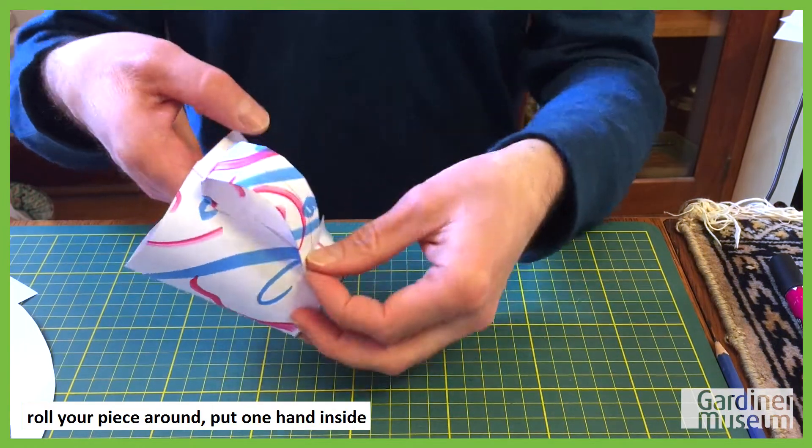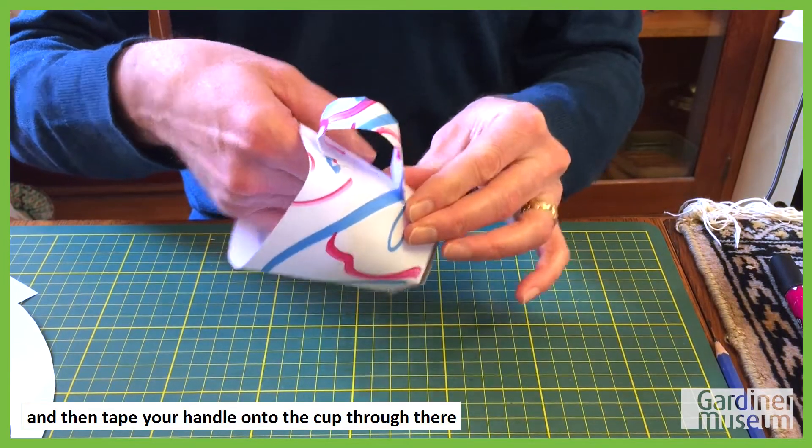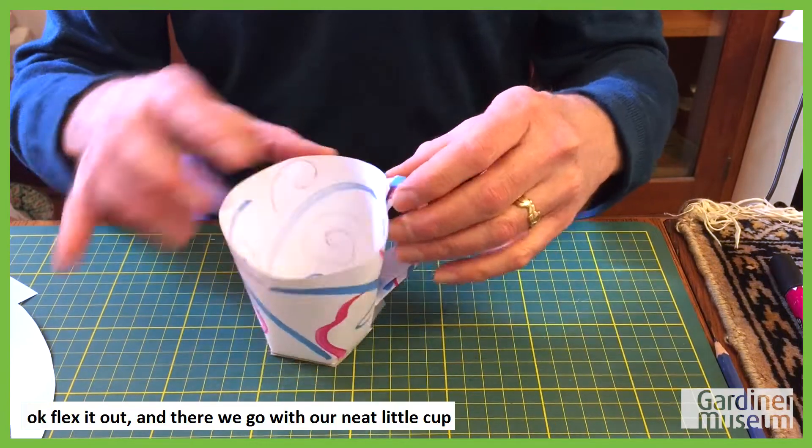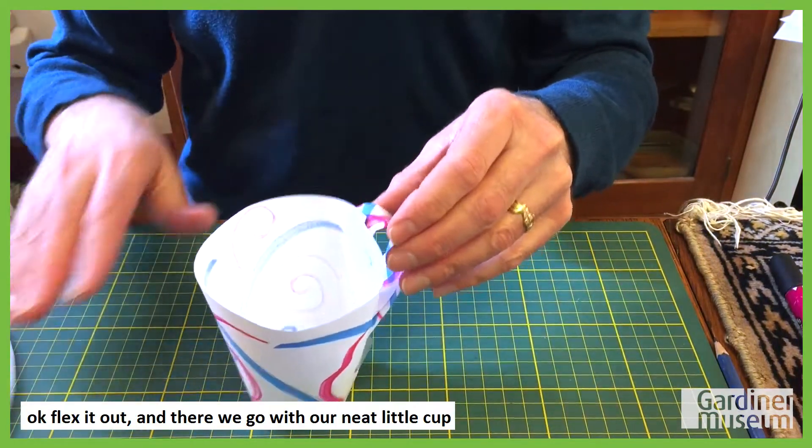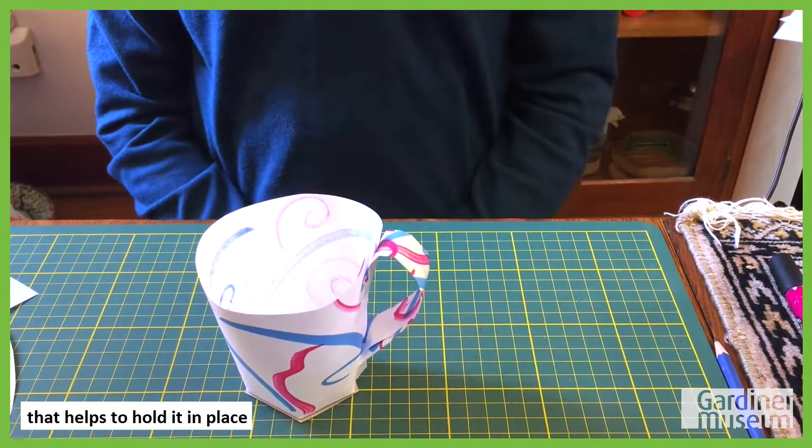Roll your piece around, put one hand inside and then tape your handle onto the cup through there. Flex it out, and there we go with our neat little cup. The boxboard gives it a little weight on the bottom that helps to hold it in place.